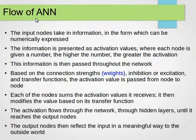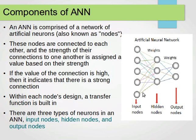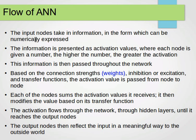Now the flow of the artificial neural network — how data flows from input to output. The input nodes take in information in a form that can be numerically expressed. These input nodes read the input from our dataset, preferably things that can be numerically expressed, so numerical features or numerical attributes. The information is presented as activation values, where each node is given a number — the higher the number, the greater the activation. We pass them on to each node and compute the weighted sum on the output.